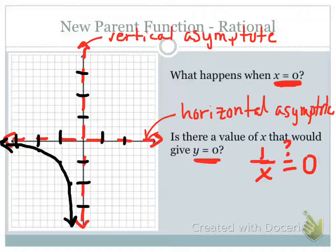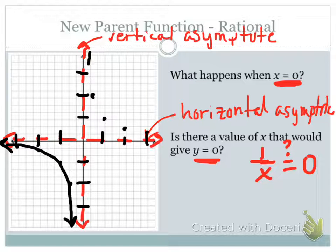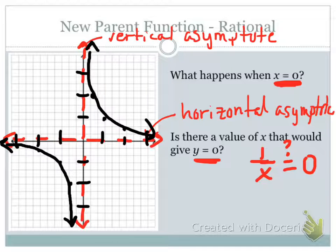We don't plot anything at 0 because x equal to 0 is undefined. Moving to the positive side: one-half gave us 2, positive 1 gave positive 1, positive 2 gave one-half, and positive 3 gave one-third. Again we see that curve, but this time it's above the x-axis because we were getting positive answers. This gives us the general form of a rational function: asymptotes on the x and y-axis, with two corner-hugger curves in the lower-left and upper-right corners.